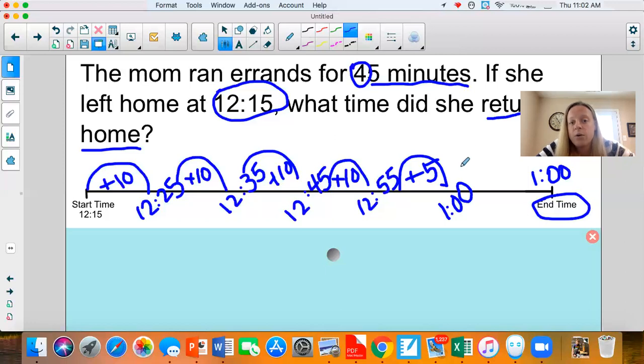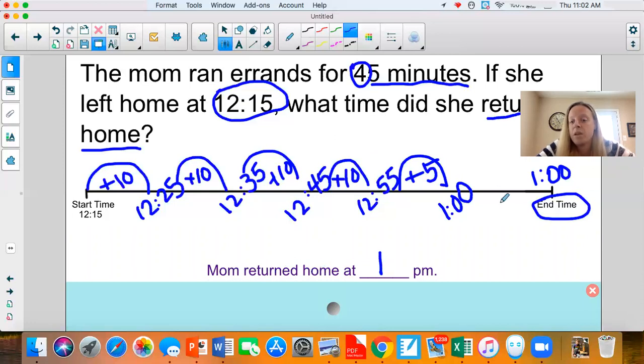So now going back, my question said, what time did she return home? So just like all of my other word problems, I would write my sentence, mom returned home at 1 PM. And then I could always go back and double check that work.